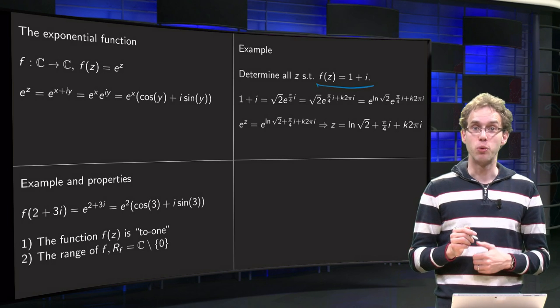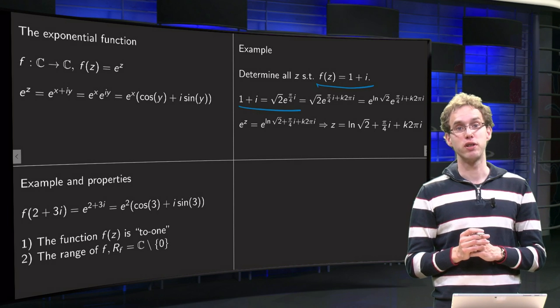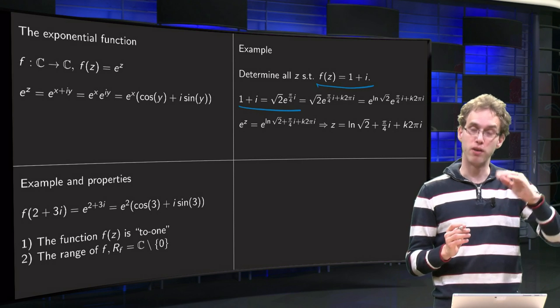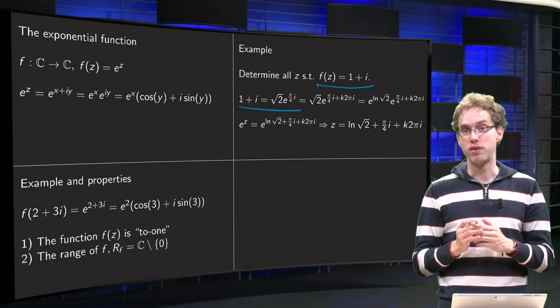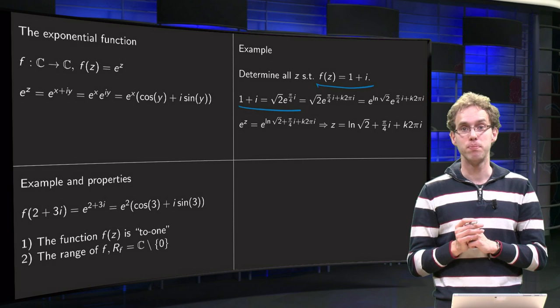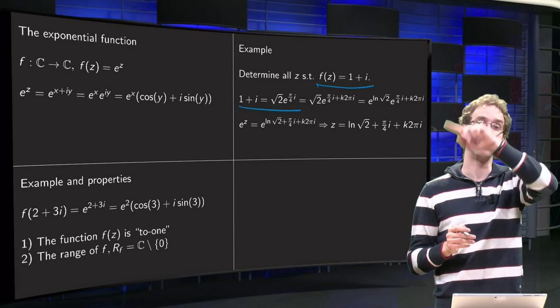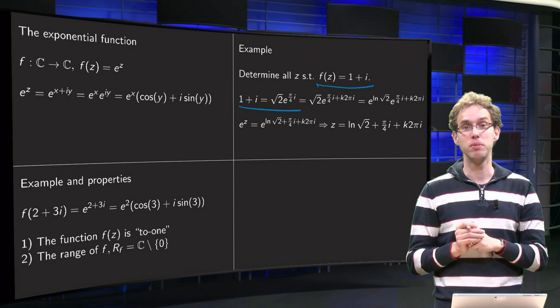We can write 1 plus i in polar form. Norm of 1 plus i is square root of 2, and its argument is π over 4, so 45 degrees. Polar form equals square root of 2 times e to the power i π over 4.